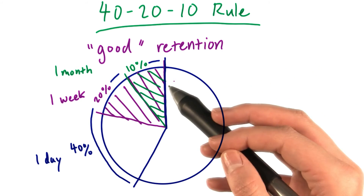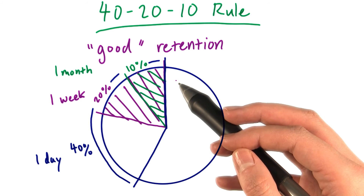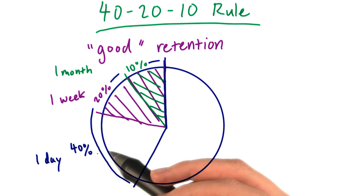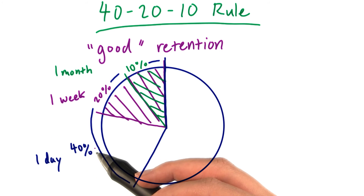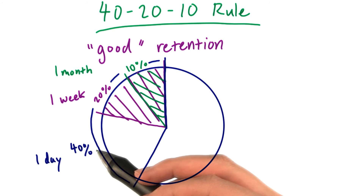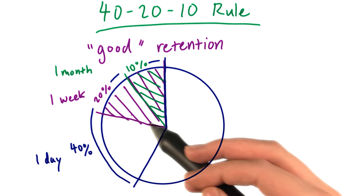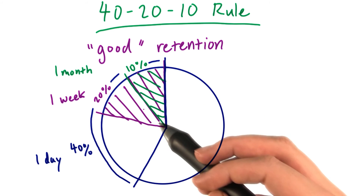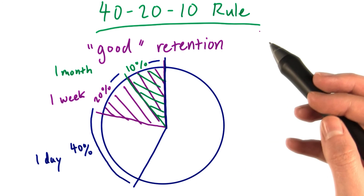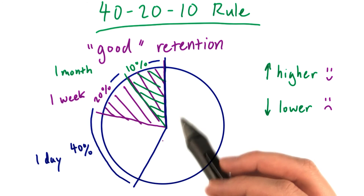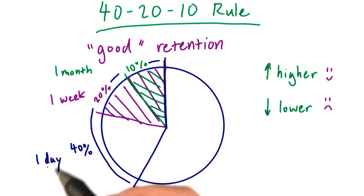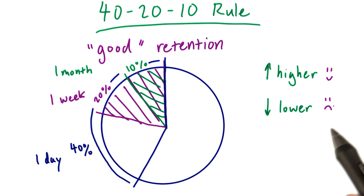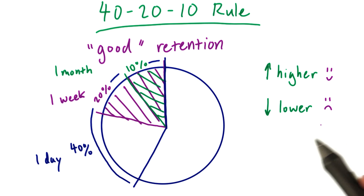So after a game is downloaded by a bunch of people, we start with 100% of players. 40% of those users stick around after the first day, 20% stay for a week, and only 10% stay for a whole month and even longer usually. If you have retention at these time points — a day, a week, or a month — that's higher, that's great. If it's any lower, that's considered bad retention.